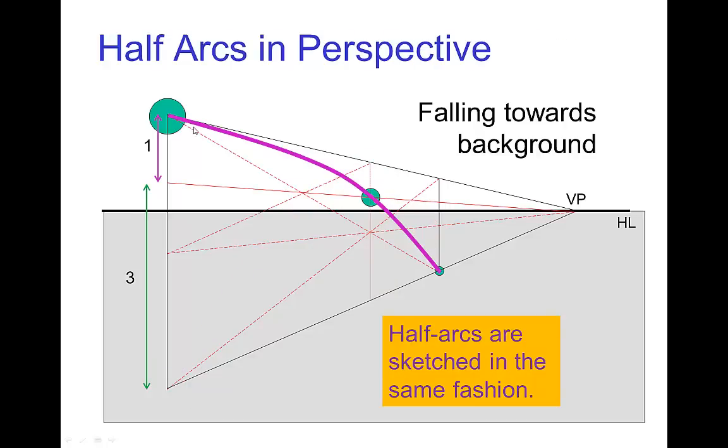And if we have a half arc, it's exactly the same procedure, so just locate the fourth down at half time point, and once you have that sketch in the arc.